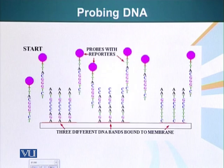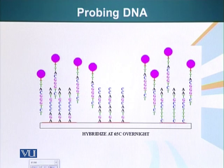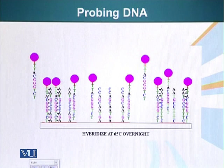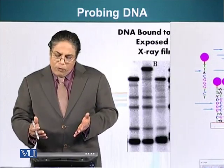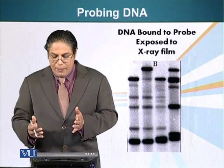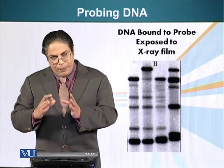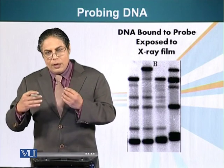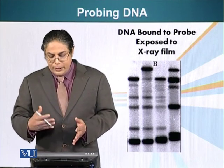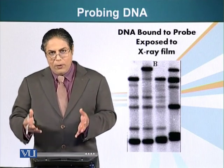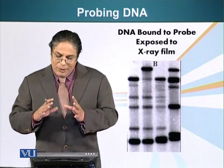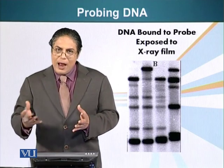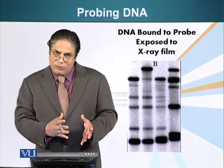If there were only one band, it would mean that the restriction site had been mutated. So this is a technique we use to detect the presence or absence of a change in the DNA sequence. This is a photograph of a gel exposed to an X-ray film used to determine whether a particular mutation has caused removal of a restriction site or not. These techniques have had a great impact on human life and society, and they are improving to an extent that will definitely have a great impact on the lives of human beings in the future.